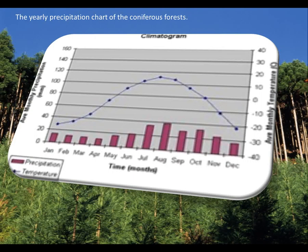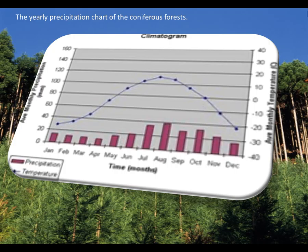It goes from about 30 in January and then goes up through February, March, April. Towards the center you get the highest levels of precipitation and the highest levels of temperatures. Does that make sense?